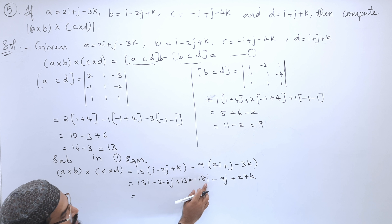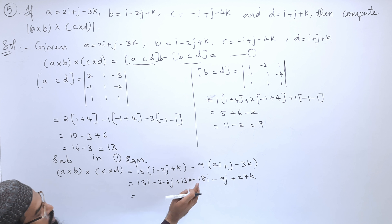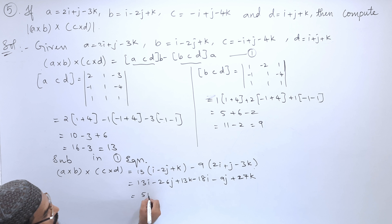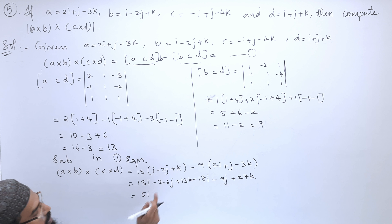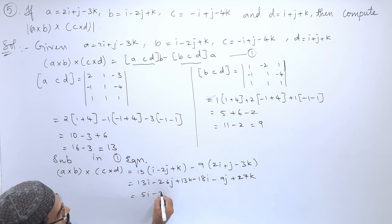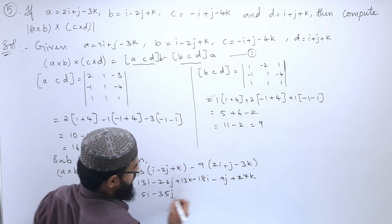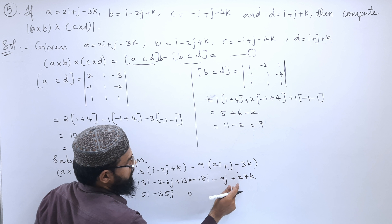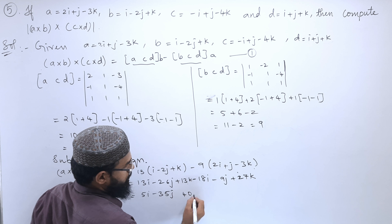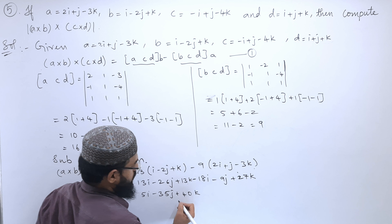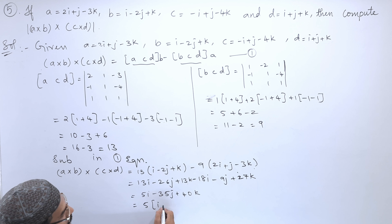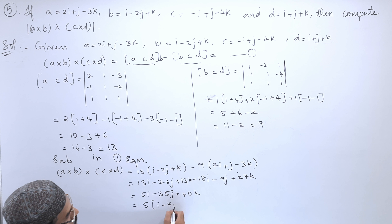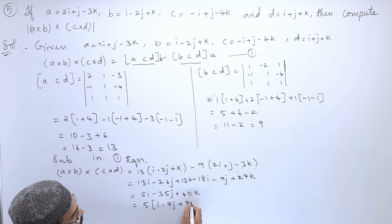Collecting terms: (13 − 18)i = −5i, (−26 − 9)j = −35j, and (13 + 27)k = 40k. So the result is −5i − 35j + 40k. Taking 5 common: 5(−i − 7j + 8k).